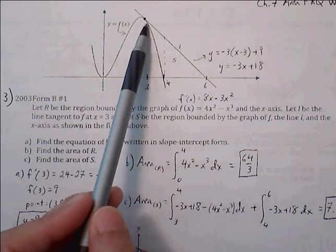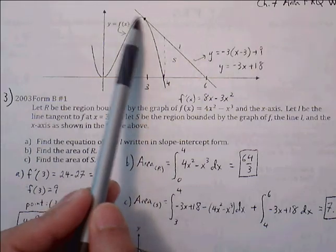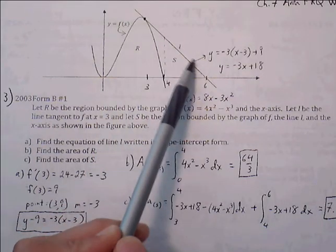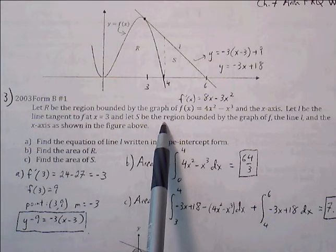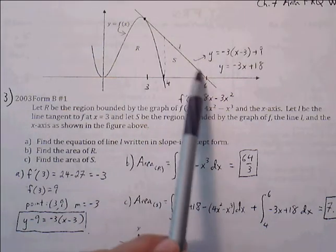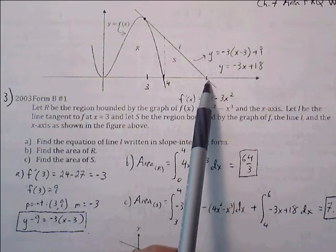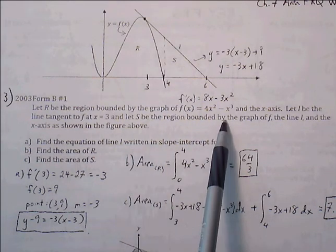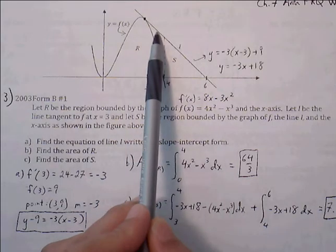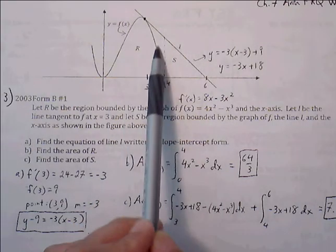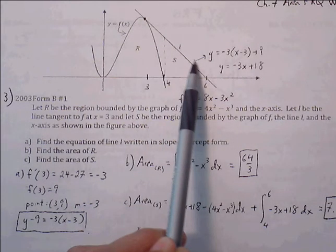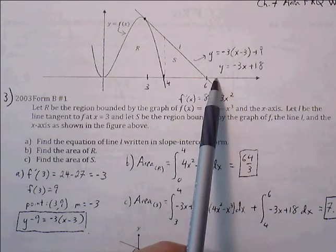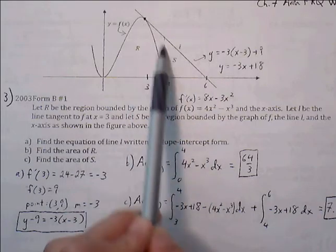L is the line tangent to the curve at x equals 3 — there's the tangent line to the curve at x equals 3. This tangent line is also going to act as a boundary for region S. Region S is bounded by the graph of f, the line up top, and the x-axis at the bottom — it's this little triangular region here.